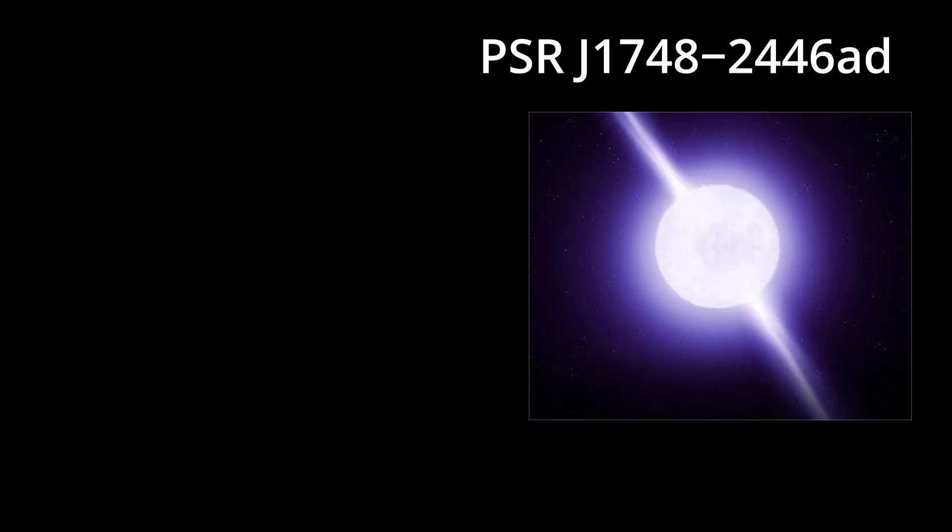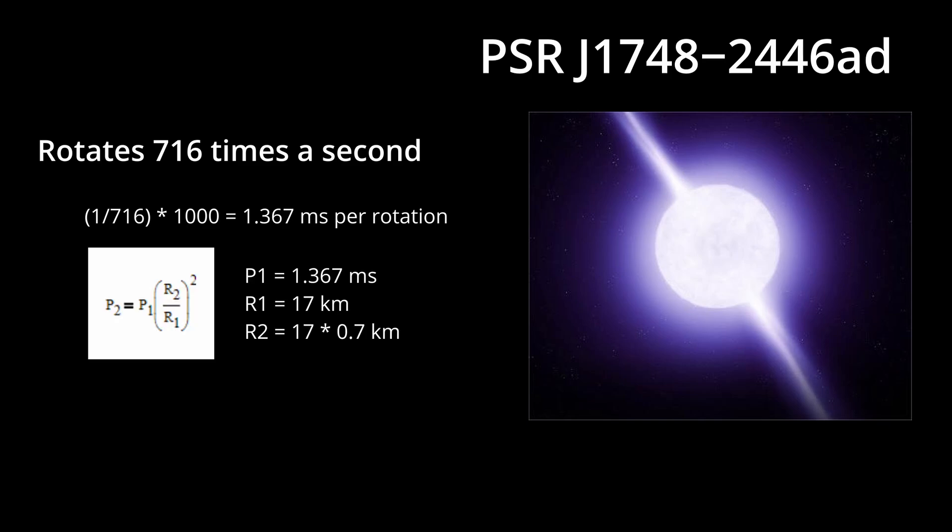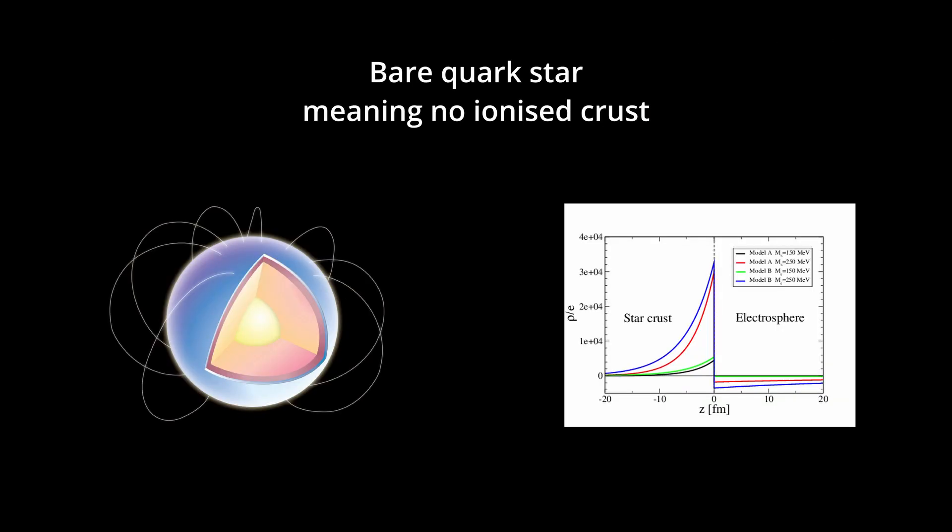And yet, even if the neutron star with the fastest known spin rate were to shrink its radius by 30%, its new spin rate would still be within the theoretical limits for a neutron star. Furthermore, if we are to assume a bare quark star, that would mean that it would be held together by the strong force rather than gravity.